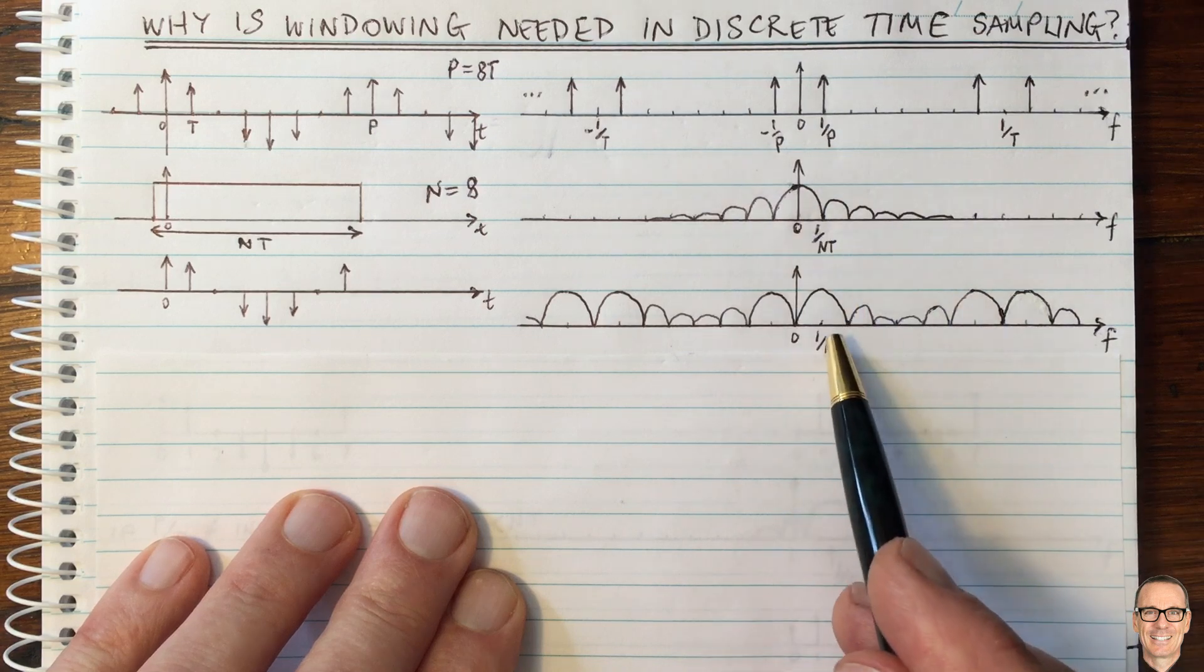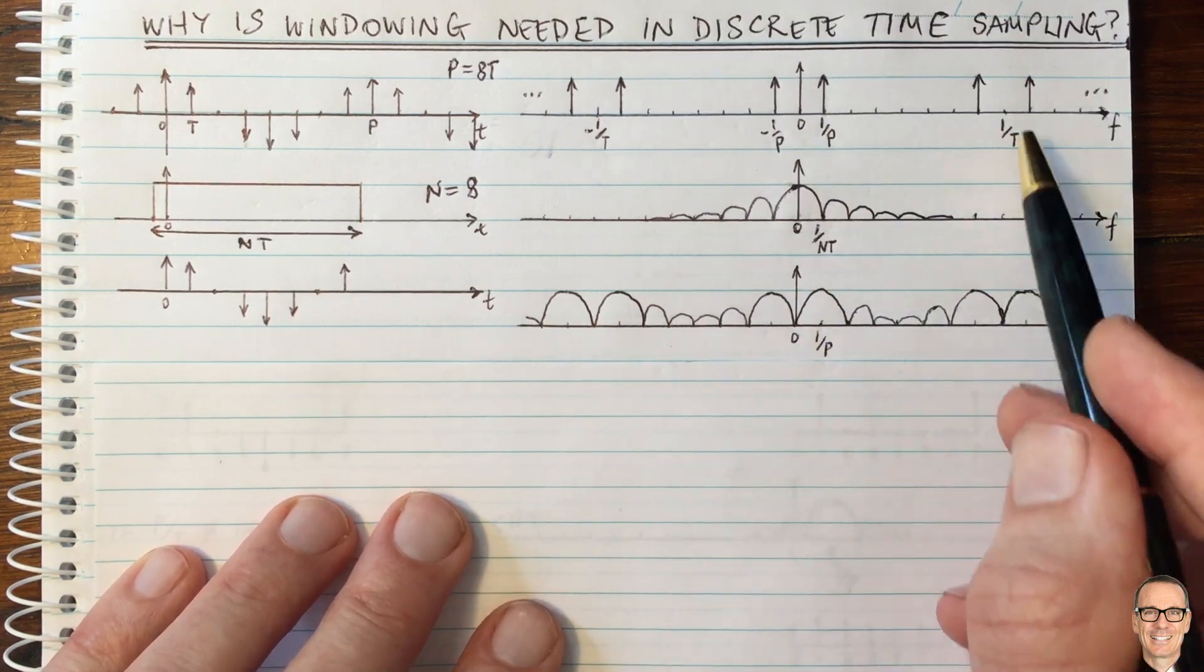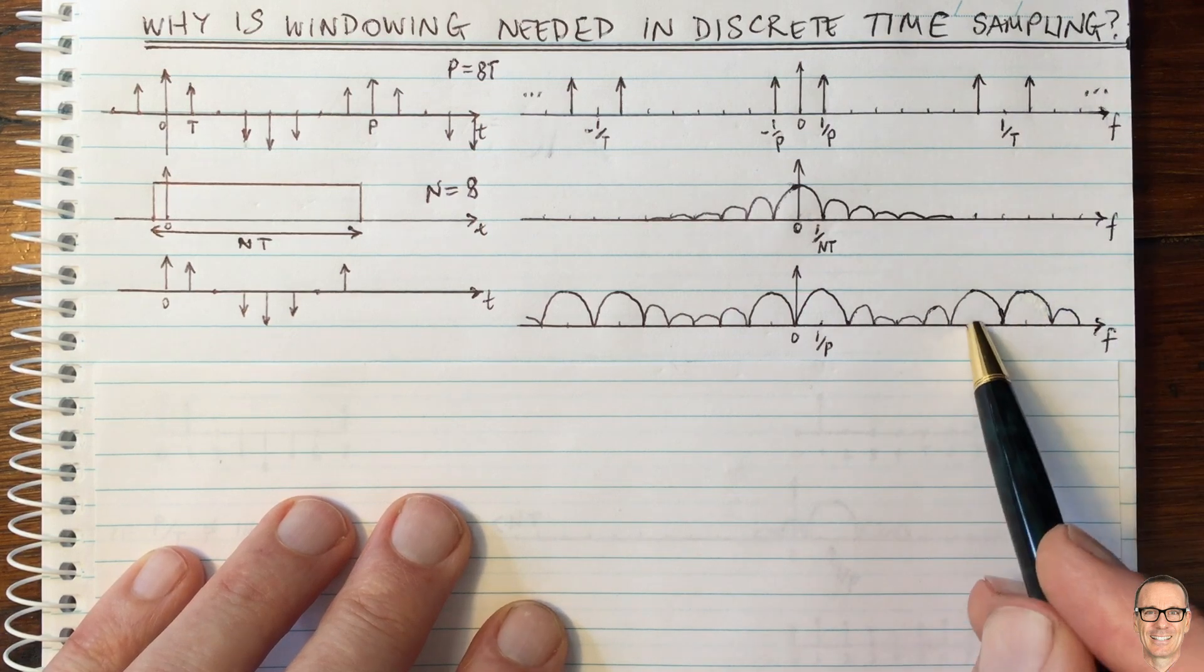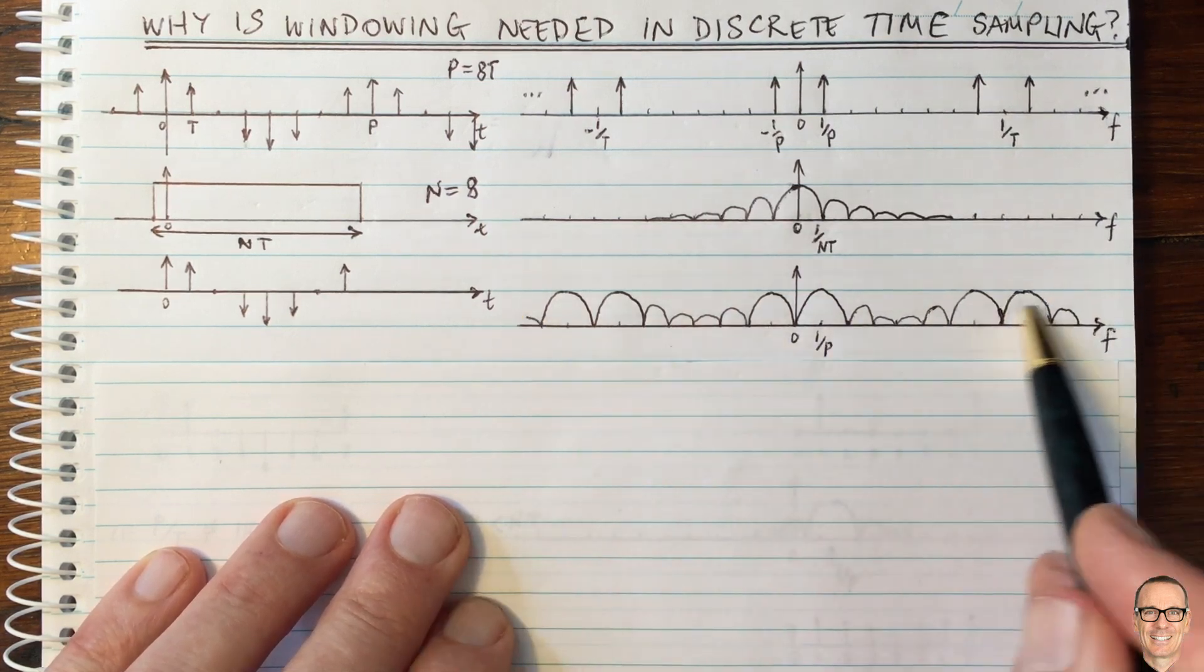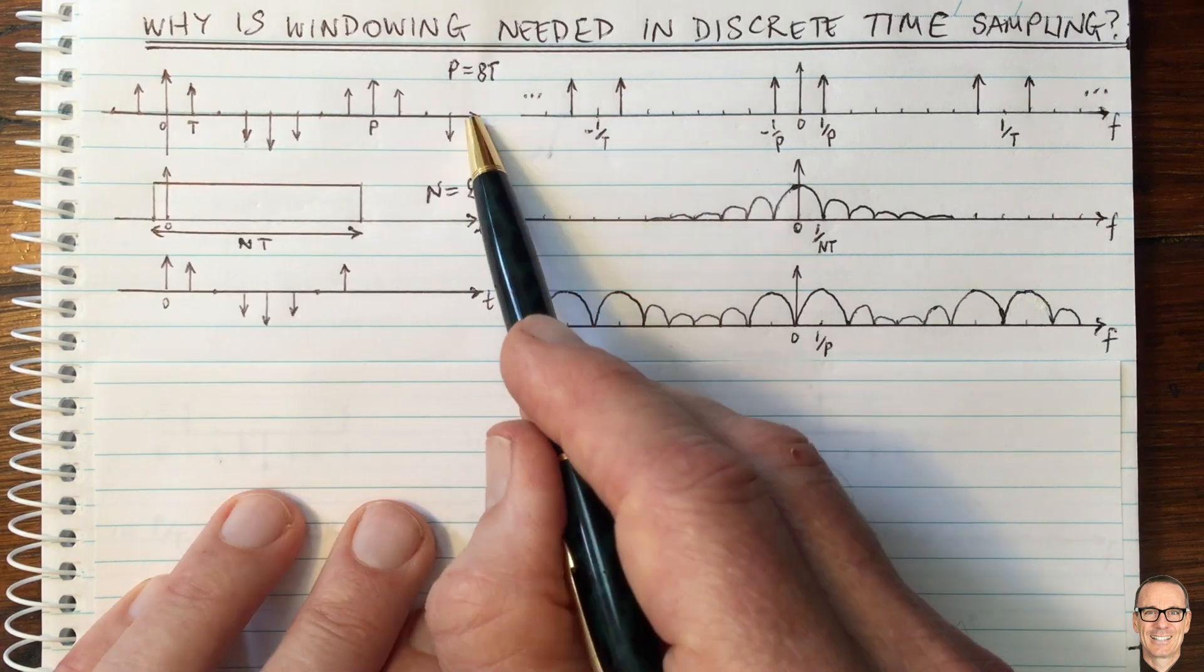So this function here is appearing at one on P, negative one on P, and then these other values up here of frequency. This is the Fourier transform that you have once you have windowed your sampled waveform.